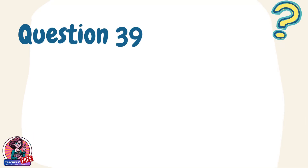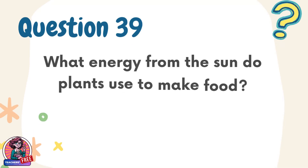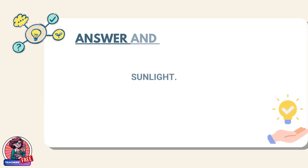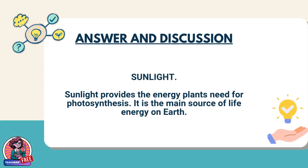Question 39. What energy from the sun do plants use to make food? Answer: Sunlight. Sunlight provides the energy plants need for photosynthesis. It is the main source of life energy on earth.